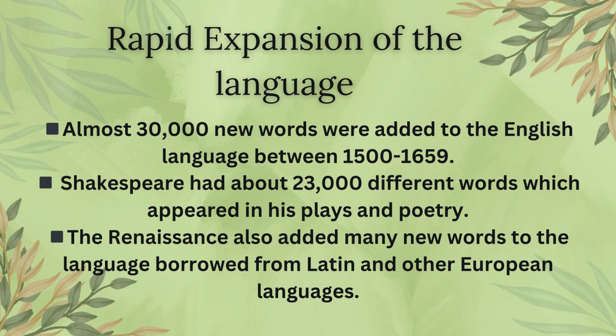Almost 30,000 new words were added to the English language between the years 1500 and 1659. Shakespeare had about 23,000 different words which appeared for the first time in his plays and poetry. The Renaissance also added many new words to the language, borrowed from Latin and other European languages.